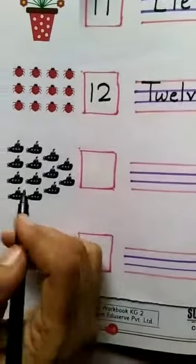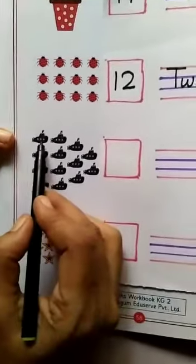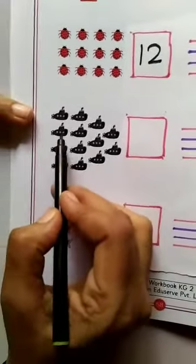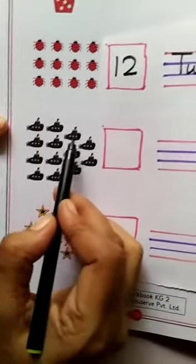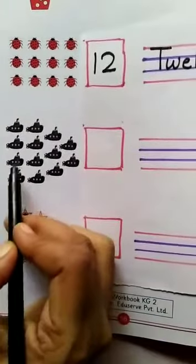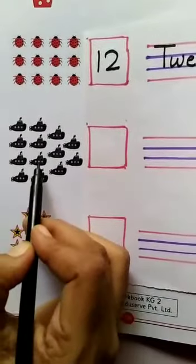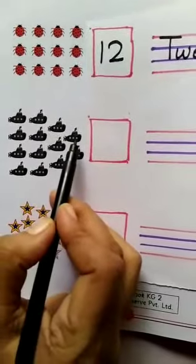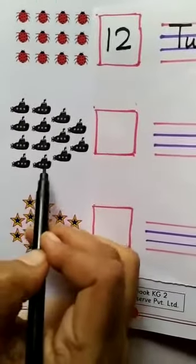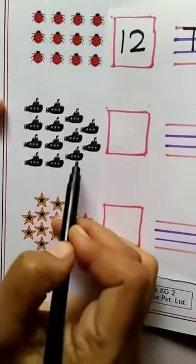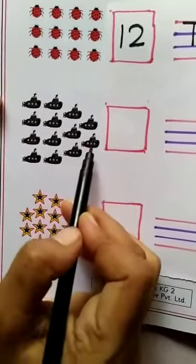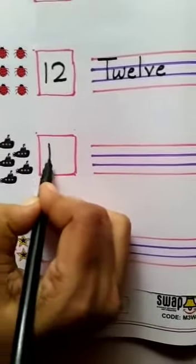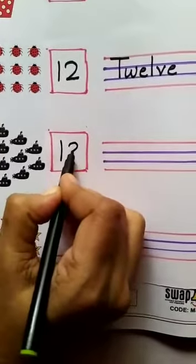Now we will count the next one. 1, 2, 3, 4, 5, 6, 7, 8, 9, 10, 11, 12, 13. Number 13.